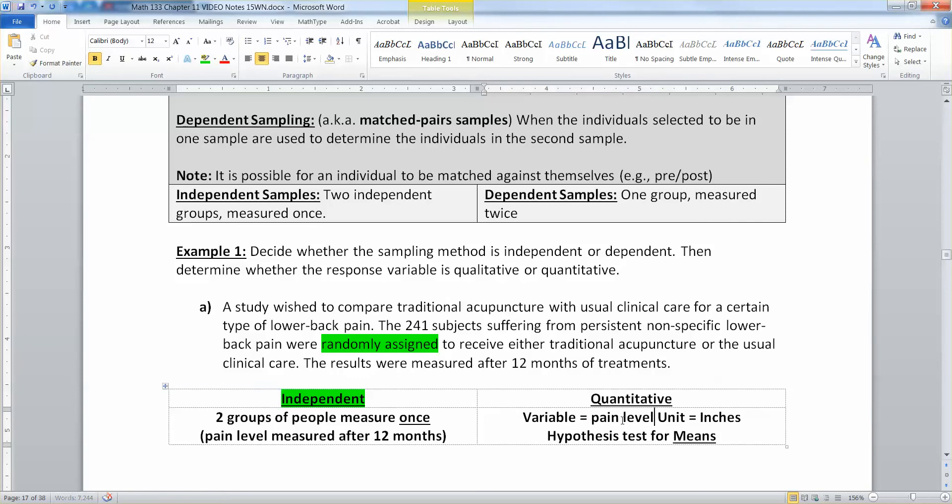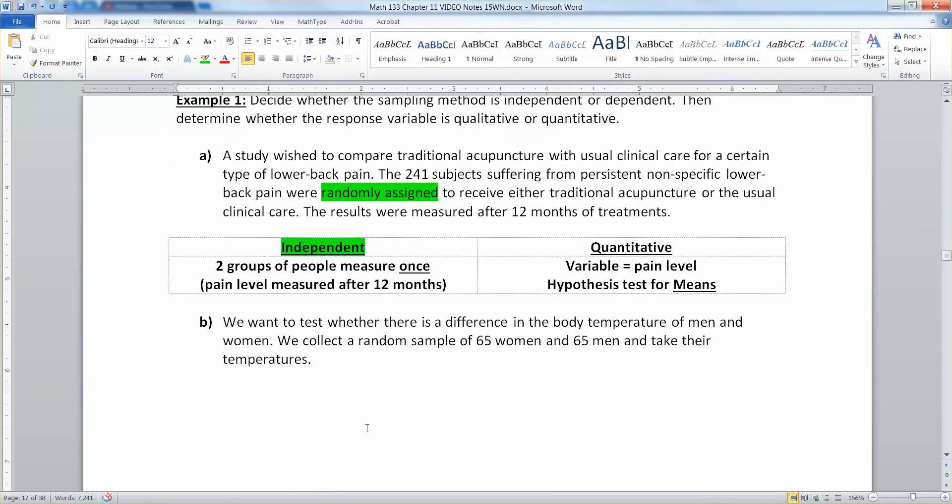Well, that's independent of each other, right? Because they're randomly assigned, you're putting two groups of people, and you're going to measure one time. You're going to measure their pain level after the 12-month mark. So the variable is pain level. There's probably some kind of scale, but we don't know a particular unit. That means that since it's quantitative, you're going to be doing a hypothesis test for the means here. You're going to want to know the difference between the two groups.